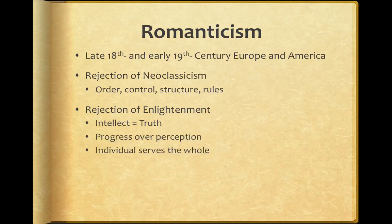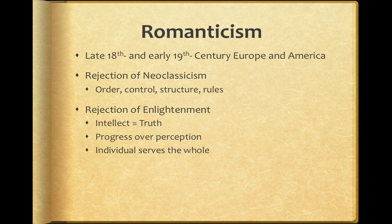The romantics also rejected the notion of progress over perception. The Age of Enlightenment people said we've got to move forward — however we're doing things today, it's got to be done better tomorrow, in everything: law, politics, science, art. Progress is the most important thing. The romantics said no — individual perception is the most important thing. They were very me-me-me in their thinking: I don't care about society's progress so much as how I as an individual feel and see the world.